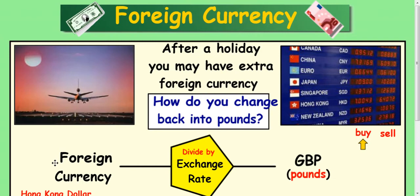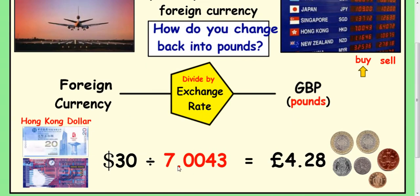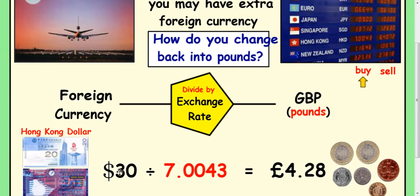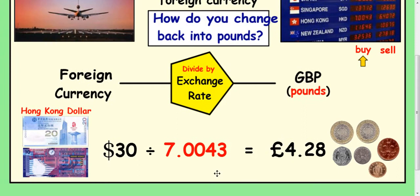Finally, what do you do to change your foreign currency back into pounds? If you finish your holiday and want to spend your money at home, all you do is get the exchange rate and do a division. For example, with 30 Hong Kong Dollars and an exchange rate of 7.0043, if you divide by that, you get back into pounds. So: multiply by the exchange rate to go abroad, divide to come back home.